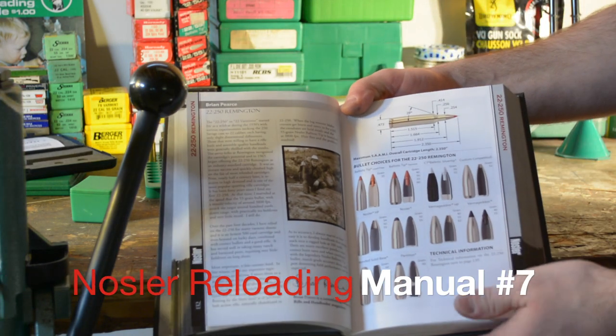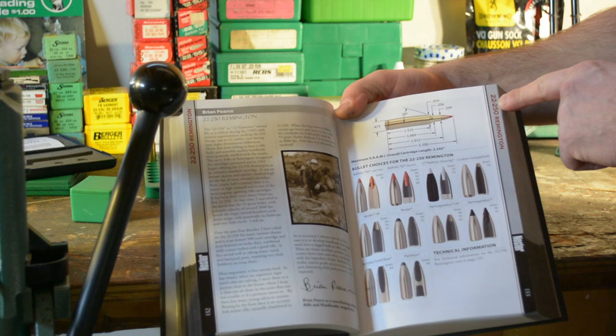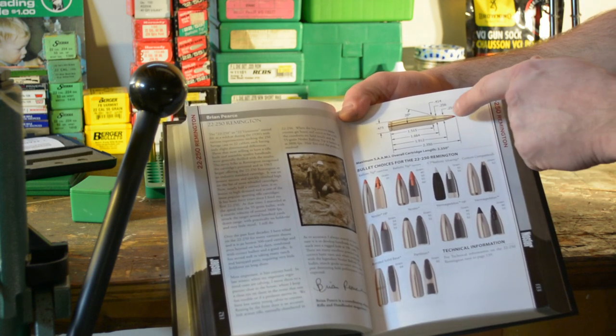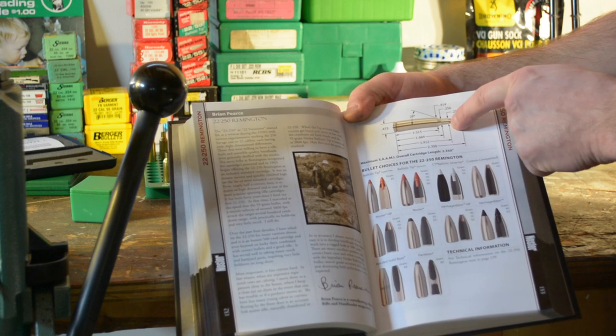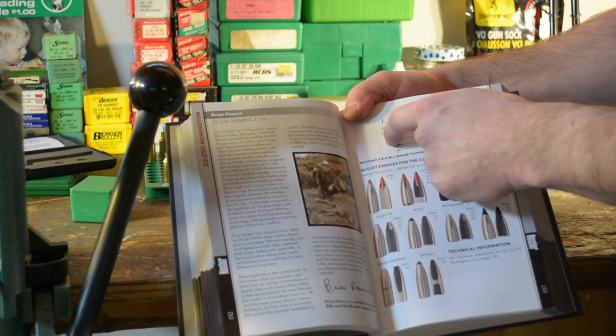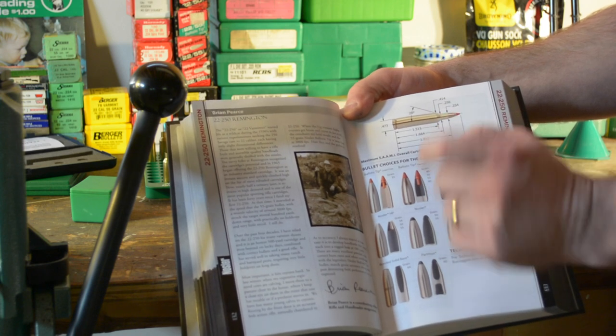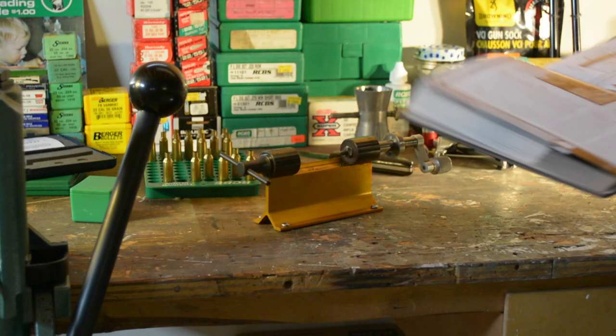In there, you'll come to your chapter on the cartridge that you're reloading for, in this case 22-250 Remington. From this spot here to the very back of the cartridge, there's a spec in there of 1.912. That's the length you want to trim your cases to.